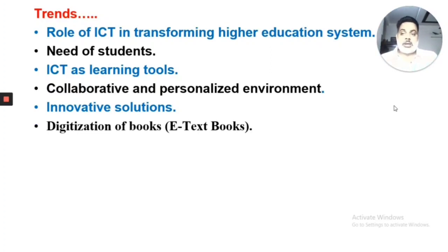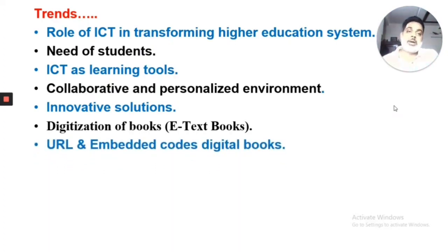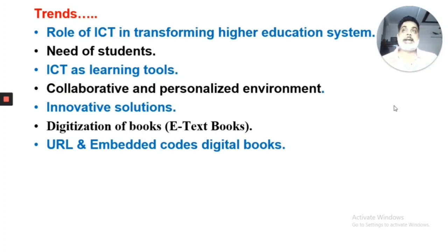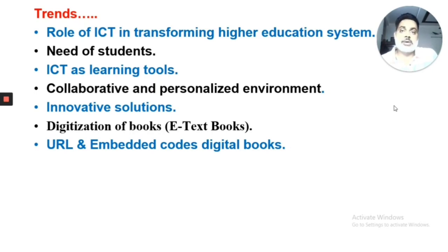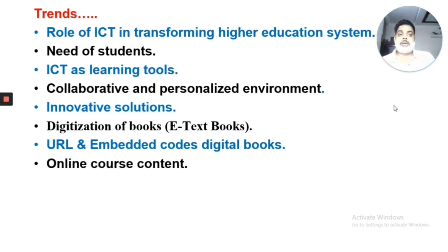Digitalization of books: ICT is playing a big role in converting books to digital format so that the masses can access resources available in our libraries. A very important point is the use of URL and embedded code in digital books. While using an e-book, learners can access a direct link, and when they click on the URL or embedded code, it will open the primary source for more information, allowing learners to access content according to their need, requirement, and pace of learning.